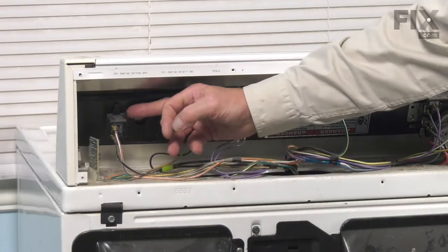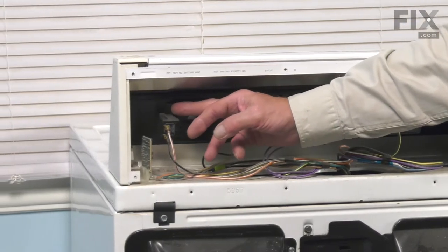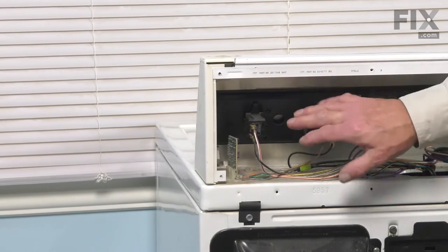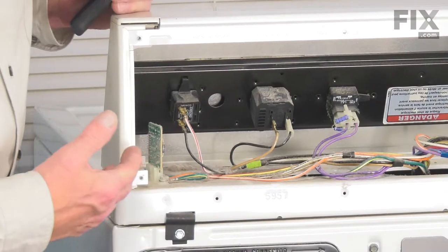As we look inside, we'll locate that push to start switch, and you'll see that there is a spring-type plastic tab that locks that switch into position on the back of the control panel housing. Now, with the back panel removed, our next step will be to remove the wires from the old switch.